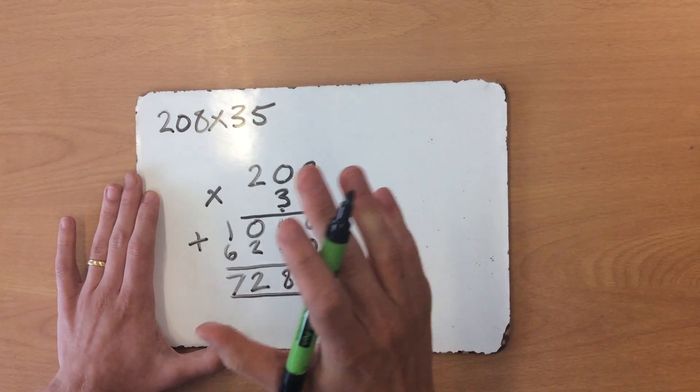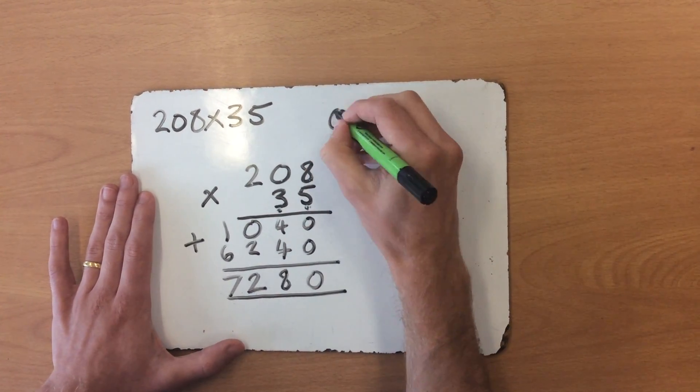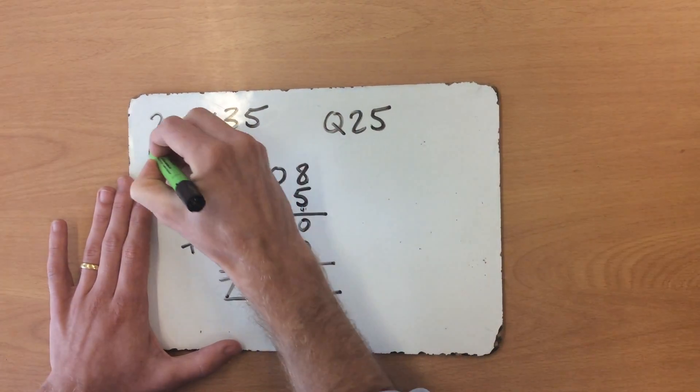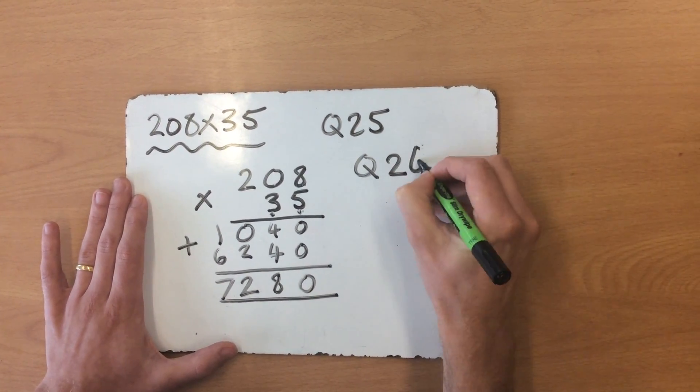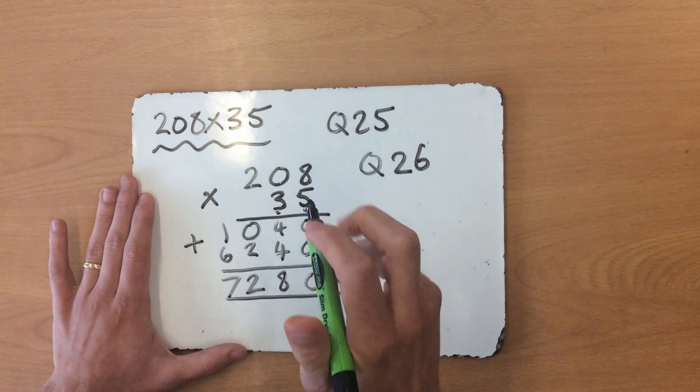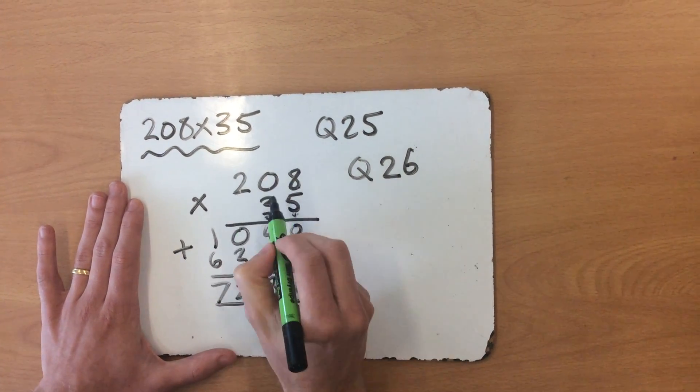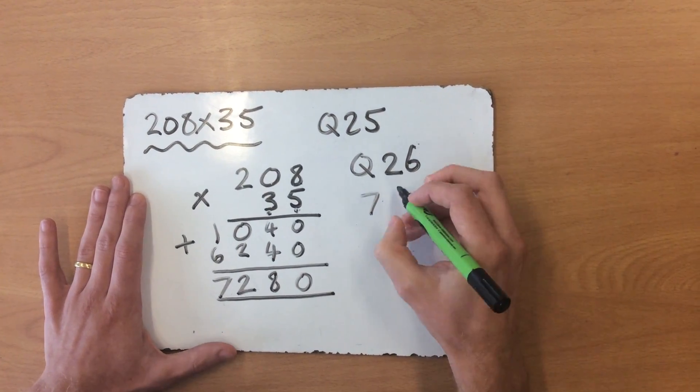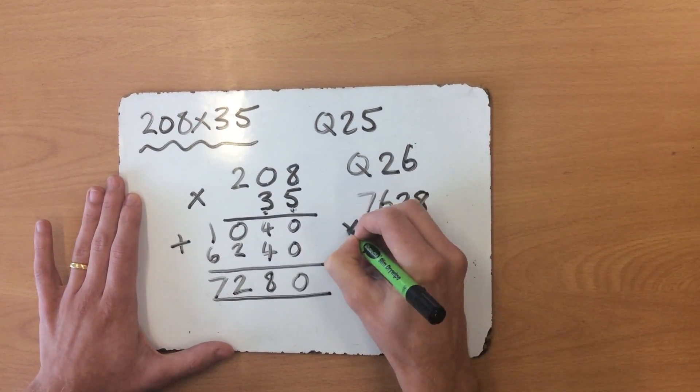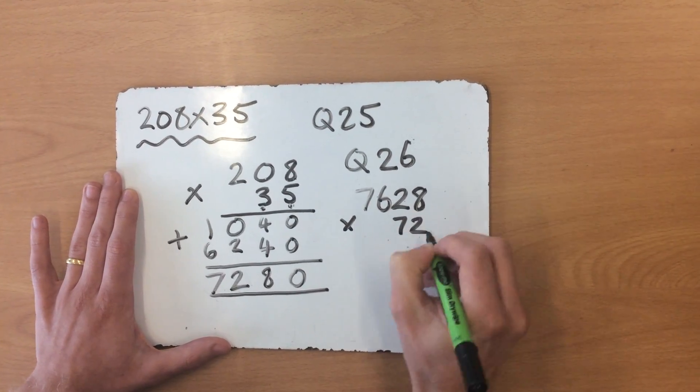Now then, if you have a look on your arithmetic paper, question 25 is very similar to this one. Whereas question 26 is a slight difference because you have a 4-digit number multiplied by a 2-digit number. If I write the question out for you, it's actually 7,628 multiplied by 72.